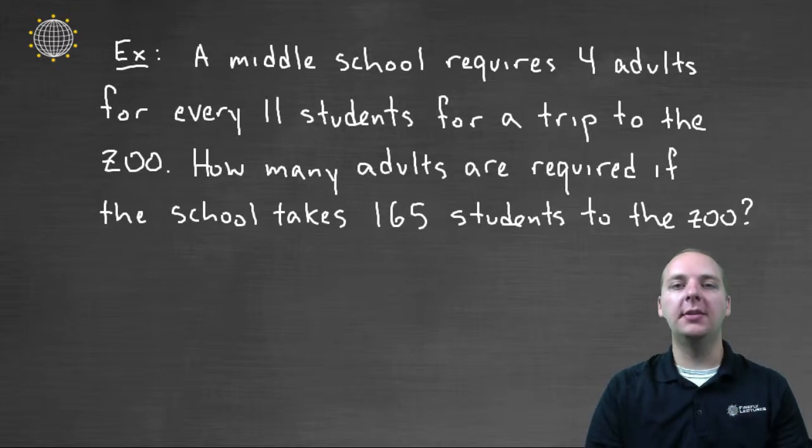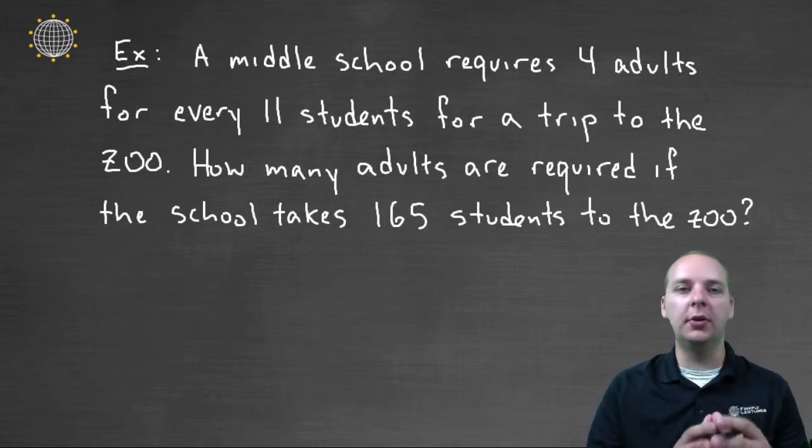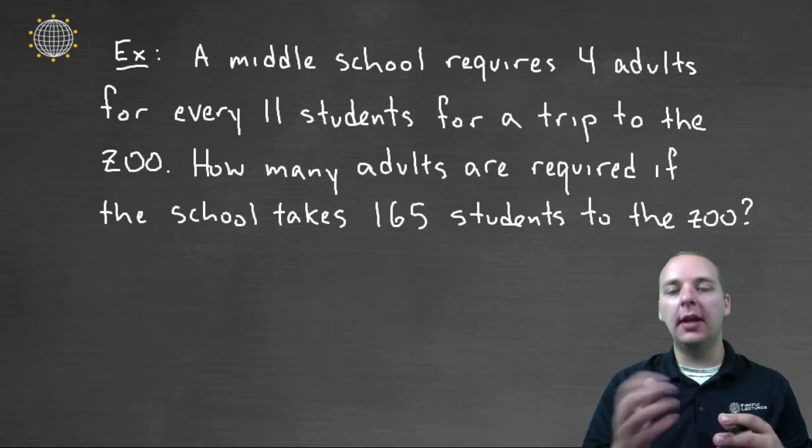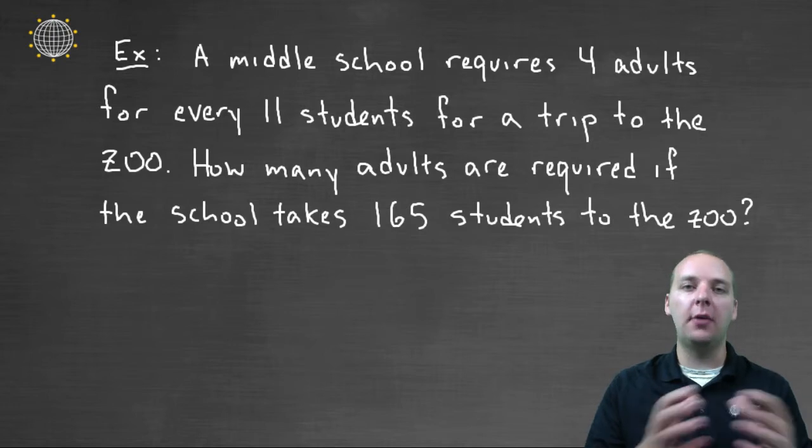Let's take a look at a real-life application that involves proportions. Usually what happens in these proportion problems is you're provided with some ratio, either a certain amount of people are left-handed compared to the general population, or a ratio of boys to girls, or adults to students. And then they're going to ask you how many adults, or left-handed people, or women would be in a larger population based off of that ratio.